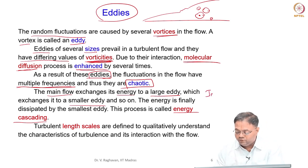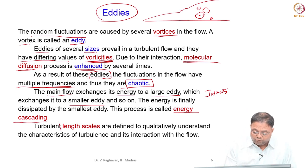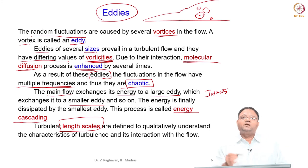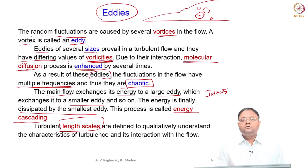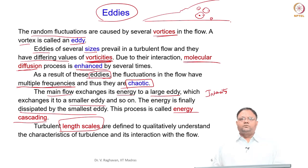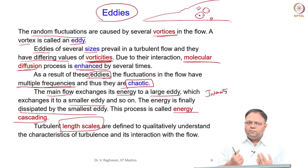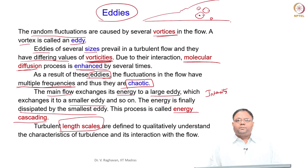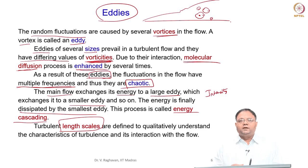Turbulence intensity we have already seen. Now, the length scale of turbulence is also very important. Several sized eddies are present, so what is the smallest scale that will dissipate and what is the largest eddy size that can be formed? The sizes of eddies contribute to several turbulent scales — unlike laminar flow which has one characteristic dimension, turbulent flow has many scales present.